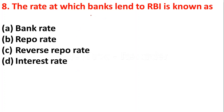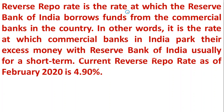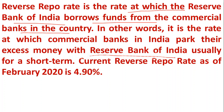Question eight: the rate at which banks lend to RBI is known as — option A: bank rate, option B: repo rate, option C: reverse repo rate, option D: interest rate. When commercial banks give loans to the Reserve Bank of India, it is known as the reverse repo rate. When commercial banks receive loans from RBI, it is the repo rate. Reverse repo rate is the rate at which RBI borrows funds from commercial banks — it is the rate at which commercial banks park their excess money with RBI, usually for a short time.